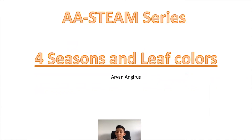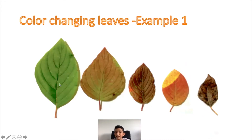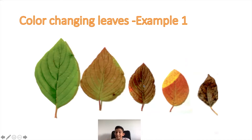Now let's talk about why leaves change color — I still haven't answered that. I'm going to show you a presentation. Example number one: as you can see, all these leaves are from the same tree. The first leaf is nice and green, then slightly red but still a little green, then you can see it also gets smaller in size and turns fully red.